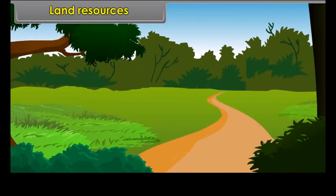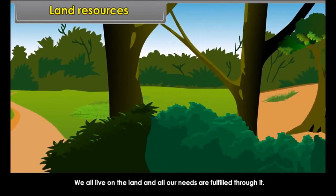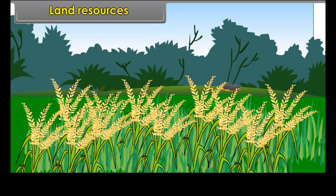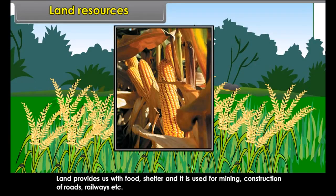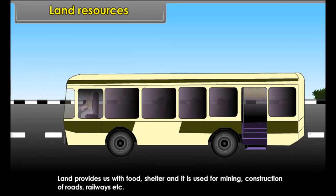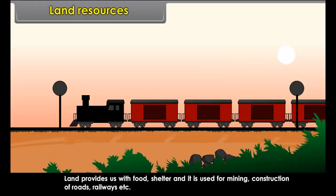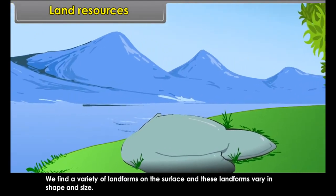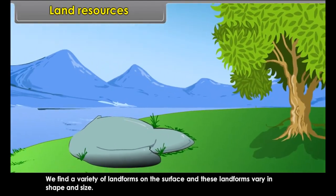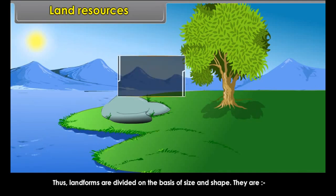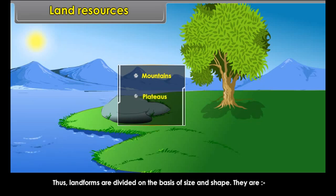Land resources. We all live on the land and all our needs are fulfilled through it. Land provides us with food, shelter and it is used for mining, construction of roads, railways etc. We find a variety of landforms on the surface and these landforms vary in shape and size. Landforms are divided on the basis of size and shape — they are mountains, plateaus and plains.